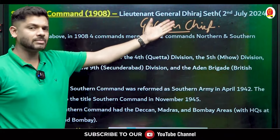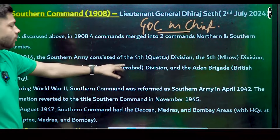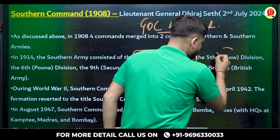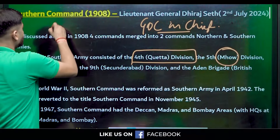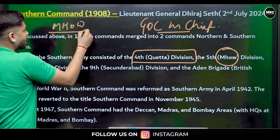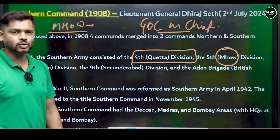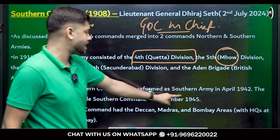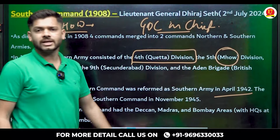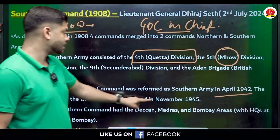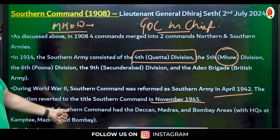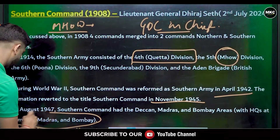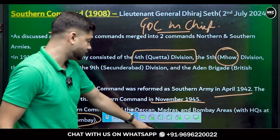As discussed, in 1908 four commands were formed. One important and famous name is MHOW — Military Headquarters of War — in Madhya Pradesh, where the Indian Army's Infantry School is located along with major defence installations. During World War II, Southern Command was reformed as Southern Army in April 1942, reverting to its original title in November 1945. In August 1947, it had the Deccan, Madras, and Bombay areas.